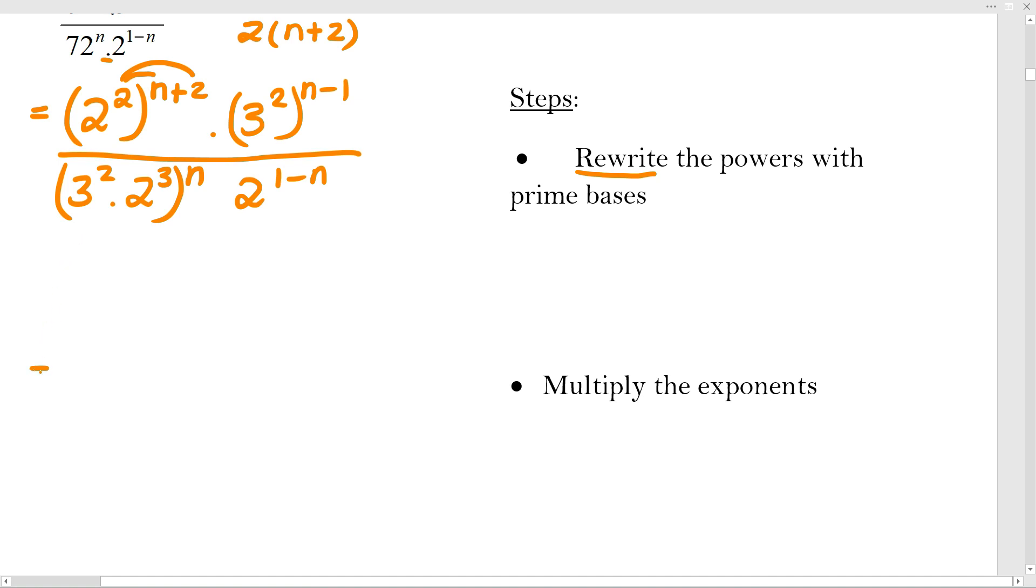So what I'm going to do now is I'm going to say 2 to the 2n, careful here, plus 4, not 2. I'm not just copying and pasting what's there. I've got to multiply it out properly. That will then be 3 to the 2n minus 2 because I'm multiplying by distributing. All of that goes over the bottom, and here I've got to distribute the n to the 2 and to the 3, and by that I mean the exponents. So it's going to be 3 to the 2n times 2 to the 3n.